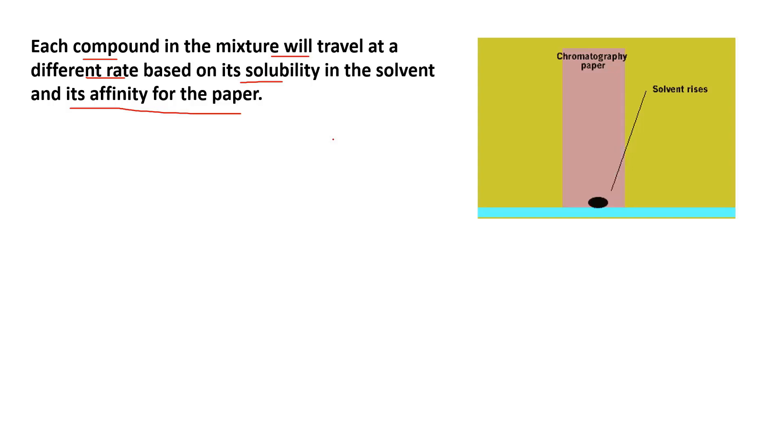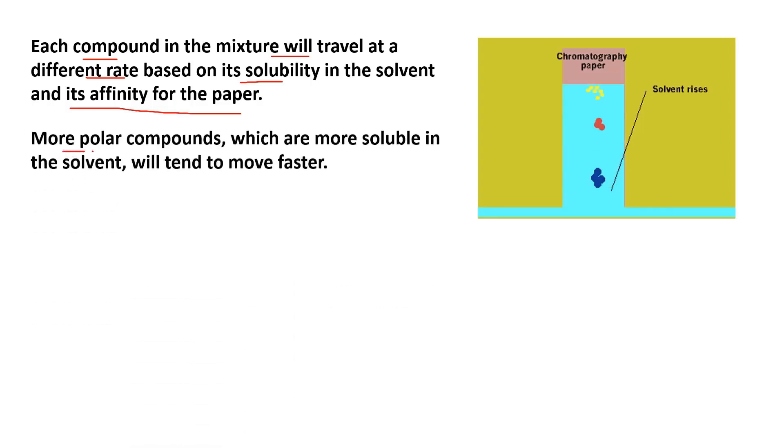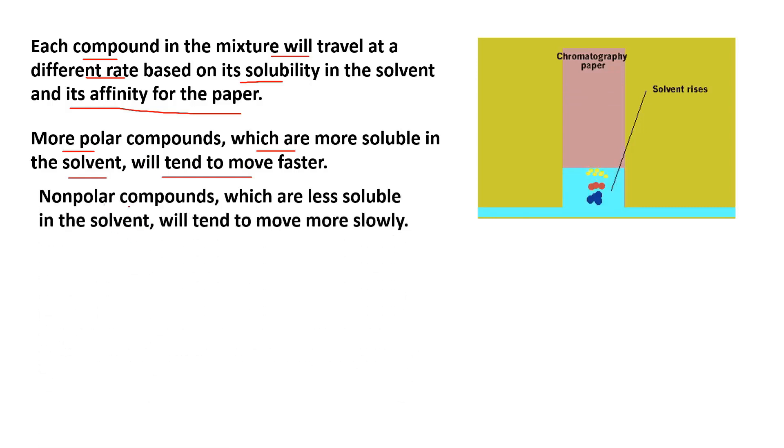They will have different bands formed because they move from different speeds. More polar compounds which are more soluble in solvent will tend to move faster, while less polar compounds which are less soluble in the solvent will tend to move more slowly.